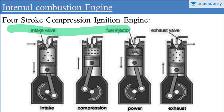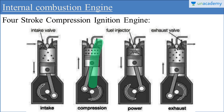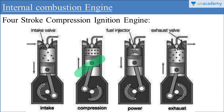This is the working of a 4-stroke compression ignition engine. In the compression ignition engine we generally consider 4 strokes: intake stroke, compression stroke, power stroke, and exhaust stroke. The air enters into the cylinder during the suction stroke, then air is compressed by the piston during the compression stroke. The pressure and temperature of the air increases, and at the end of compression the fuel enters into the cylinder or combustion chamber with the help of a fuel injector.